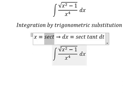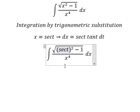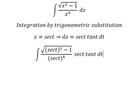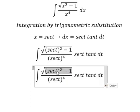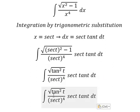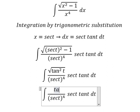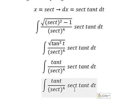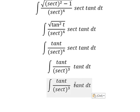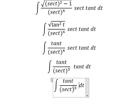I will put this into the integral here and here. The dx we change for this expression. So inside we have tan²(t). The square root of tan²(t) is tan(t). So sec(t) times sec(t) we can simplify, and tan(t) times tan(t) gives tan²(t).